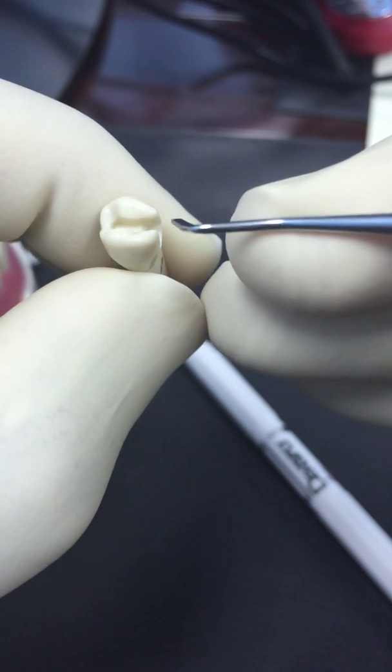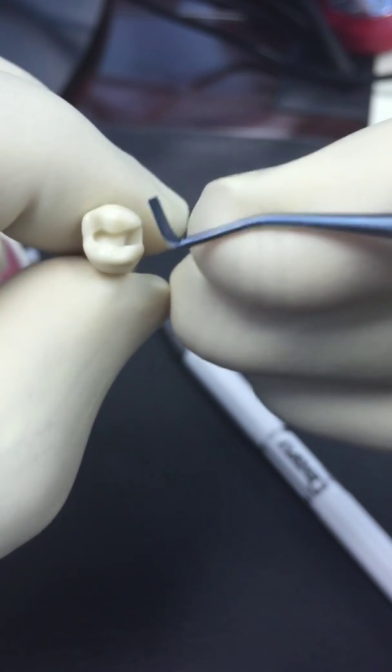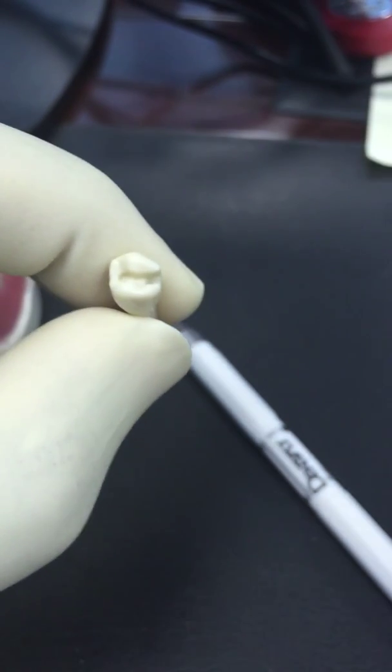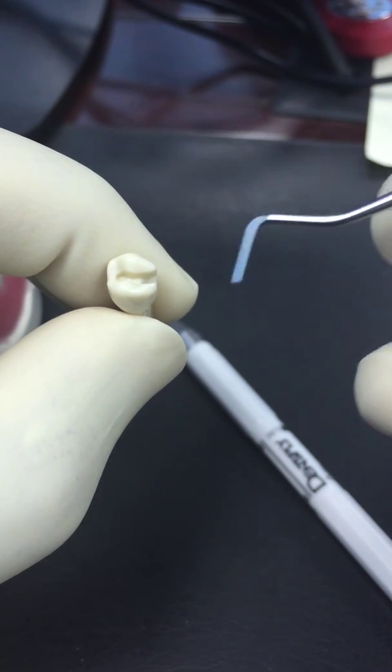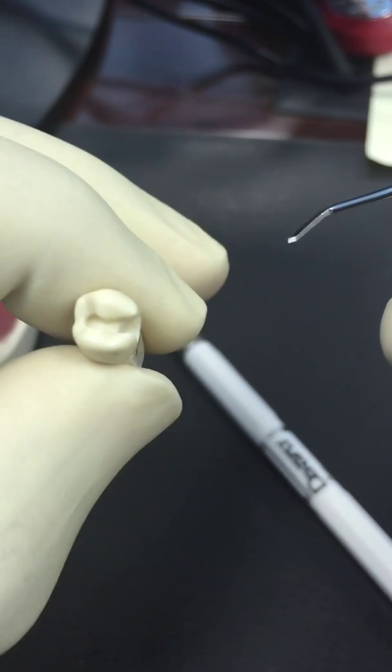As you can see here, we will use the enamel hatchet, and you can see that it has a beveled angle at the end of the blade.